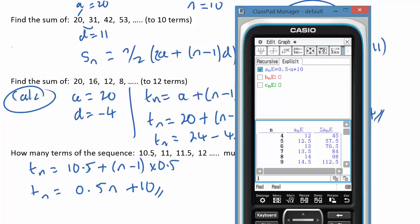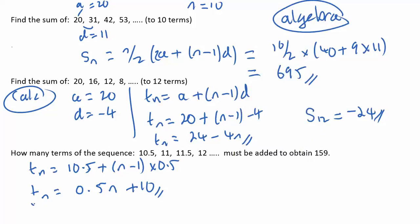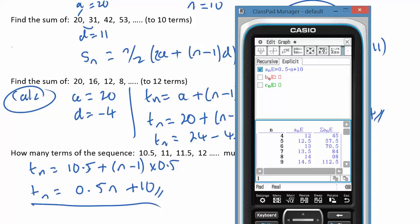10.5 is my first, difference of 0.5. I enter in my calculator in the explicit mode, a_n is equal to 0.5n plus 10. And then once I've got that selected, hit the column display here, and then simply tab down until I find 159. Now you can see that happens when n is equal to 12, or the 12th term.